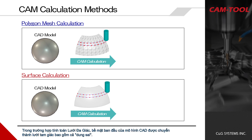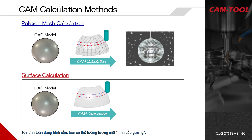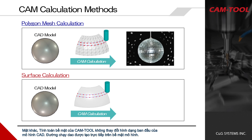In the case of polygon mesh calculation, the surface of the original CAD model is translated to triangular meshes including tolerance, so there are gaps from the original CAD data. Because the toolpaths are generated along the triangular shapes, when calculating a ball shape you can imagine a mirror ball.